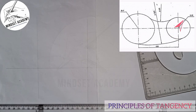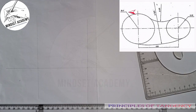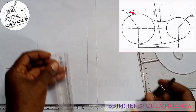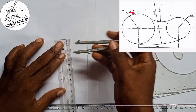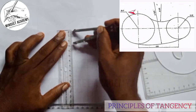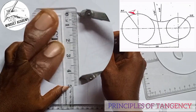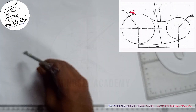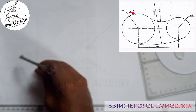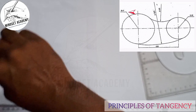Now the next thing I'm going to draw is the first circle, which is giving me a radius of 44. So I'm going to measure 44 on my metal rule, from 0 to 44 here. I'll place it at the center here and draw a circle.